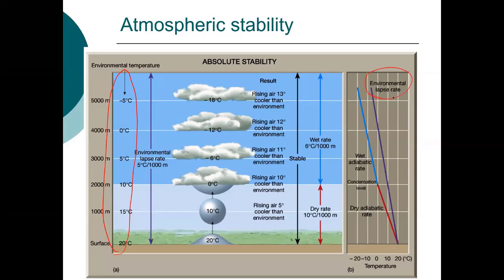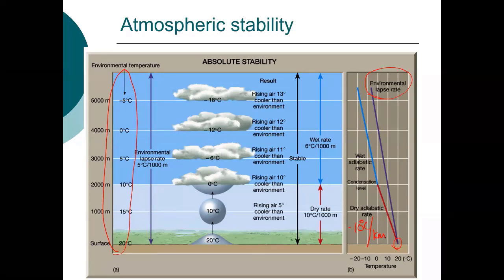We can also use that ground temperature to determine the dry adiabatic lapse rate. We start at 20 degrees and use the dry adiabatic lapse rate of 10 degrees C per kilometer decrease. In this case, clouds form at 2,000 meters. So at altitudes above 2,000 meters, we'll use the moist adiabatic lapse rate of minus 6.5 degrees C per kilometer.